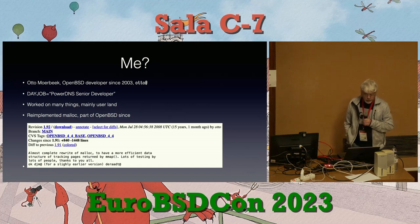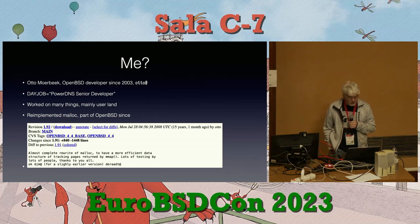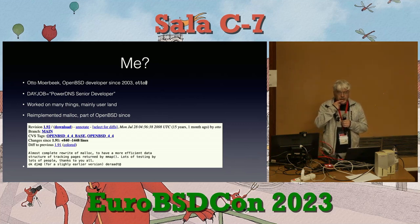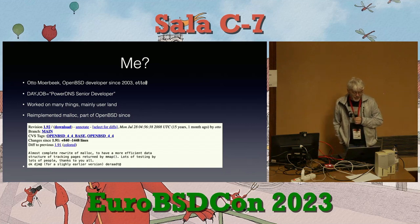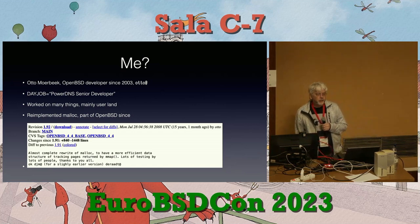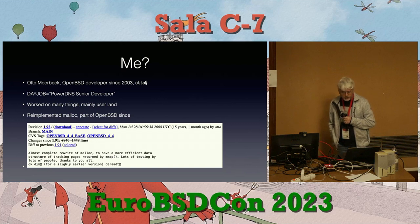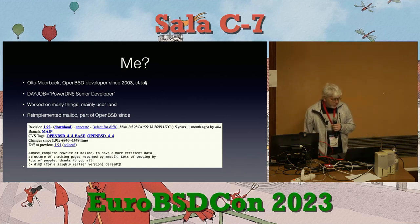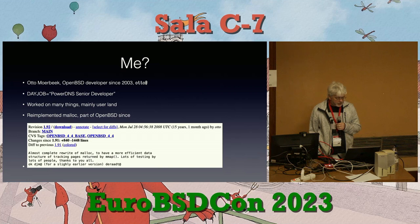My name is Otto. I've been an OpenBSD developer for more than 20 years now, and as a day job I work for a company called PowerDNS, and I work on DNS software. For OpenBSD, I worked on many things, mostly in user land — libc stuff, but also things like patch, bc, dc — all around user land, and some kernel stuff, maybe in the file system area.